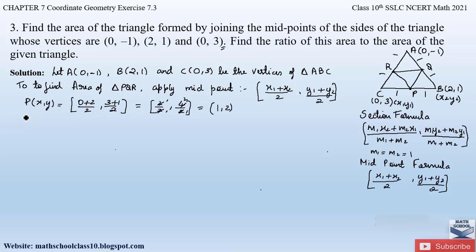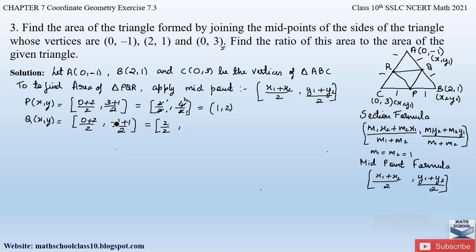For point Q, take A as (x1, y1) and B as (x2, y2). Applying the formula: x = (0 + 2) / 2 = 1, and y = (-1 + 1) / 2 = 0/2 = 0. So the coordinates of Q are (1, 0).